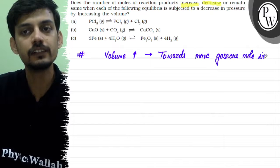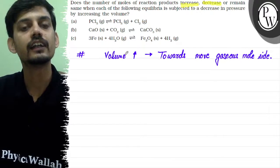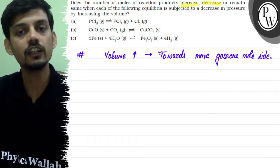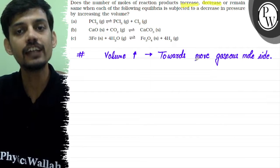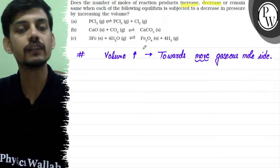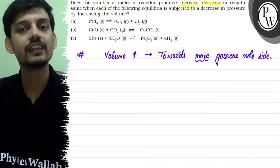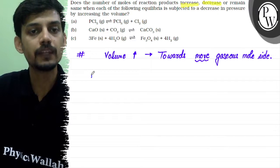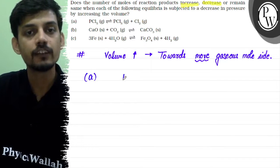We can simply remember this fact: an increase in volume shifts the reaction or equilibrium towards the side which has a higher amount of gaseous moles. Similarly, if volume is decreased, the reaction will shift towards the side with fewer gaseous moles. So let's look at the first reaction.